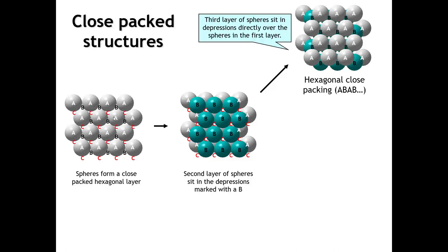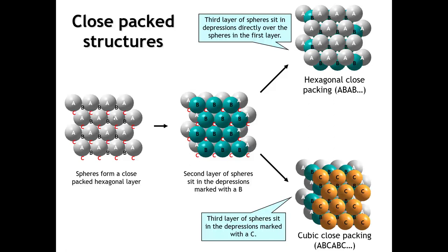If, on the other hand, we put the next layer over the depressions marked C, that would lead to a stacking that is A, B, C, A, B, C, A, B, C, repeating. We call that cubic close packing.